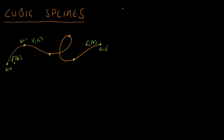Let's write out what each of these f's looks like. f(t) is going to be a cubic function: at³ + bt² + ct + d. Because I have a bunch of these, I'm going to add k subscripts — that means the kth one. So f₀(t) = a₀t³ + b₀t² + c₀t + d₀, and f₁(t) = a₁t³, and so on. All of these coefficients are going to be unique.